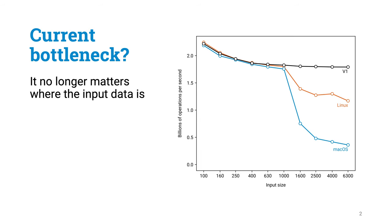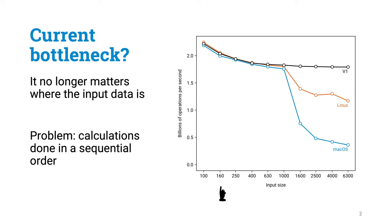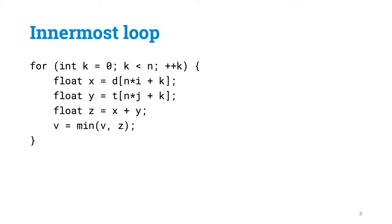In the previous part we eliminated one memory bottleneck from our program. As we can see from these benchmarks, the program is equally fast regardless of the input size — or equally slow. Even if the input is small enough so that everything fits into cache memory, we are only achieving roughly 2 billion operations per second. The reason for this relatively slow performance is that all of the minimum operations in the innermost loop happen in a strictly sequential order.